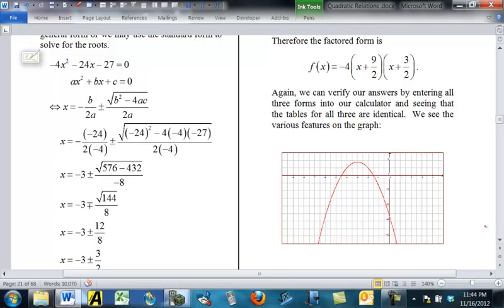And so, the factored version is negative 4 times X plus 9 halves times X plus 3 halves. Of course, we could have probably factored that as a trial and error, negative 1 times 2X plus 9 times 2X plus 3. And then we could have gotten it in the form there.